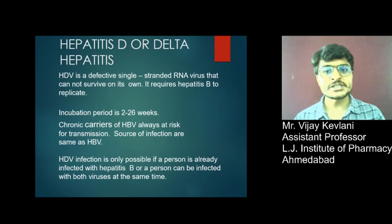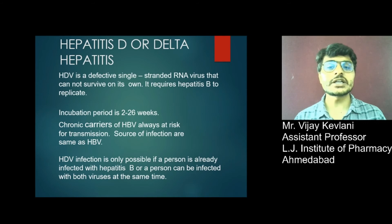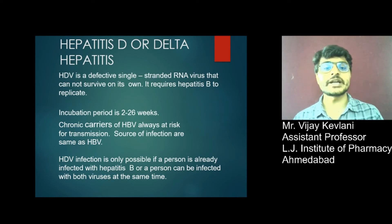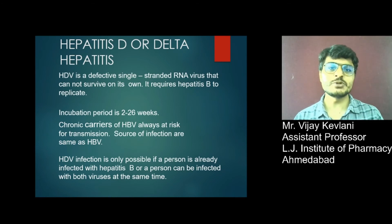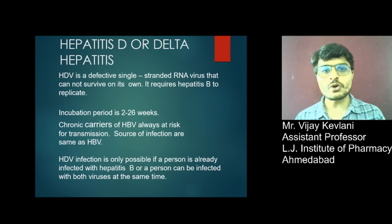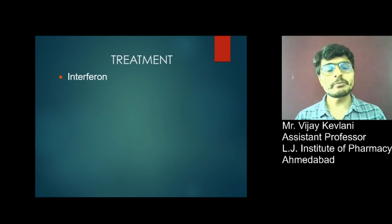Hepatitis D, or Delta Hepatitis, is a defective single-strand RNA virus that cannot survive on its own. It requires Hepatitis B to replicate. The incubation period is 2 to 26 weeks. Chronic carriers of Hepatitis B virus are always at risk for transmission. Sources of infection are the same as Hepatitis B. Hepatitis D virus infection is only possible if a person is already infected with Hepatitis B. Diagnosis is by anti-Hepatitis D virus antibody and Hepatitis D virus antigen. Treatment is with interferon.